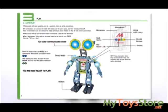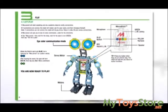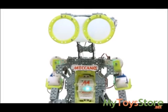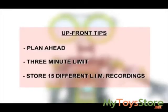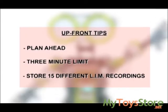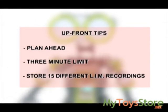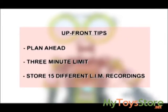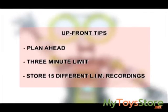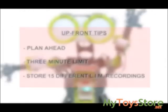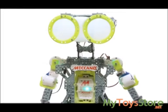LIM allows you to create and record animations by physically moving the robot and recording sounds into its mechabrain. When you activate LIM, Mechanoid will immediately record all movements and sounds. You can record up to three minutes for each LIM recording, and you can name and save up to 15 different LIM movements on the mechabrain, accessing them by voice command through the LIM library.